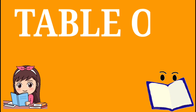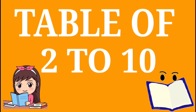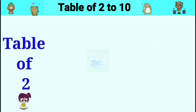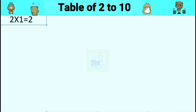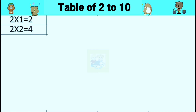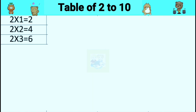Table of two to ten. Table of two. Two ones are two. Two twos are four. Two threes are six.